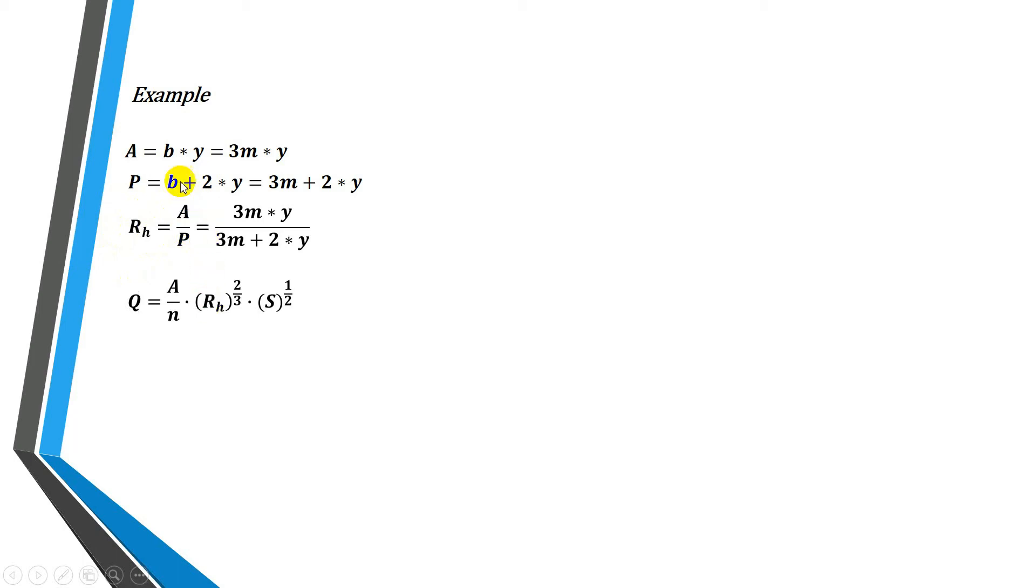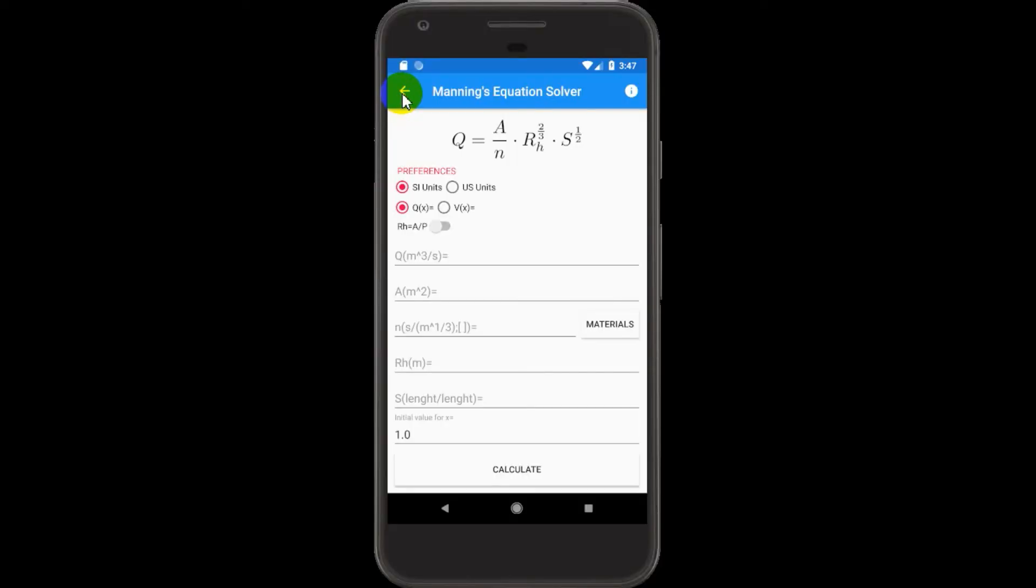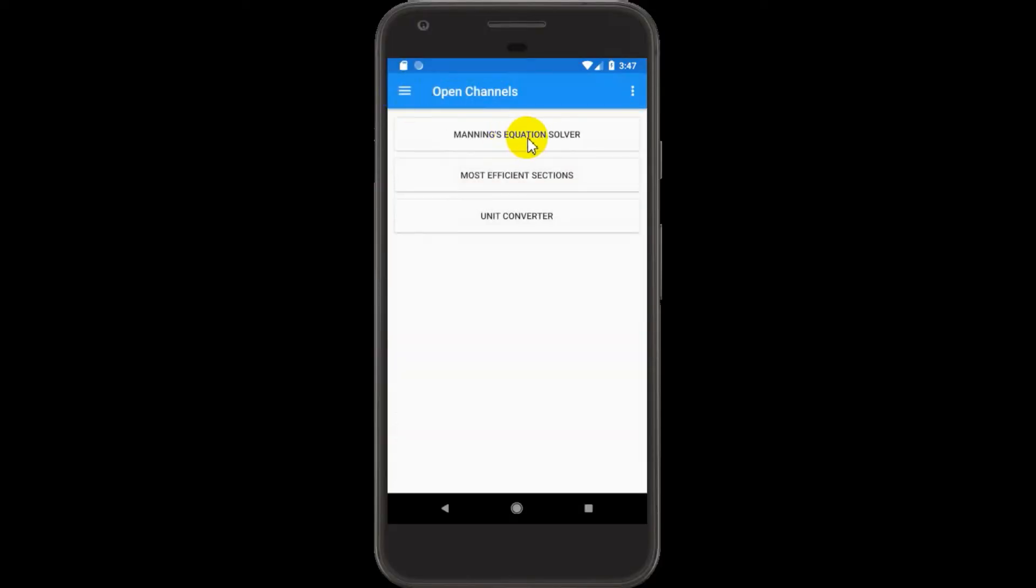Finally, we need to replace all these values in the Manning's equation, and we get the following equation. This is a one-variable equation. We can use a calculator for solving it, or use numerical methods, or even try to find y. In this case, I will use an Android application. I will leave the link on the video description. So let's continue with the application, and we will be using the Manning's equation solver.